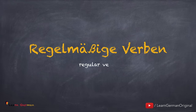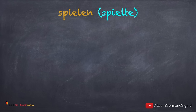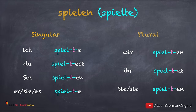Jetzt schauen wir uns an, wie wir regelmäßige Verben im Präteritum konjugieren. Let's learn how to conjugate the regular verbs in Präteritum. The Präteritum form for spielen is spielte. It's always easy to learn this form and then you can conjugate. As also mentioned in the previous video, the conjugation for ich and er, sie, es in Präteritum is the same.